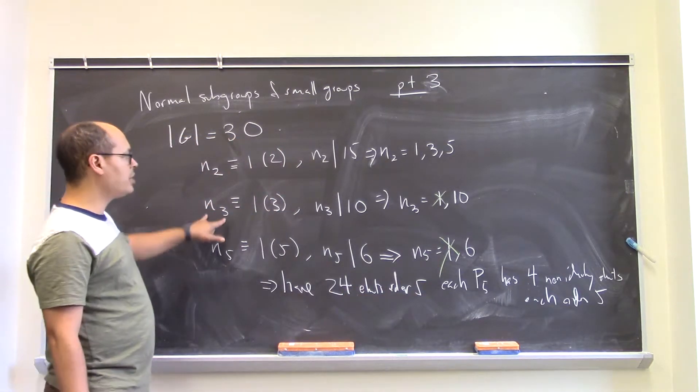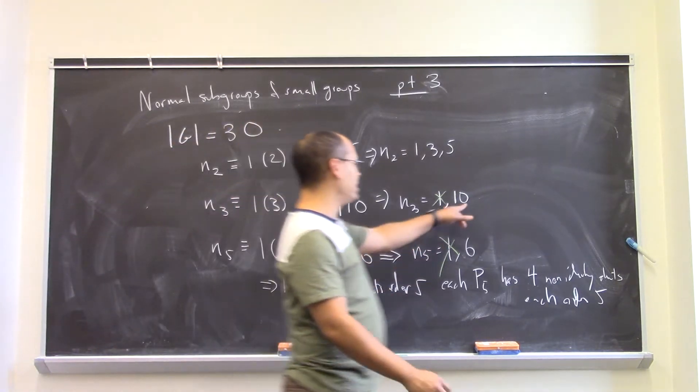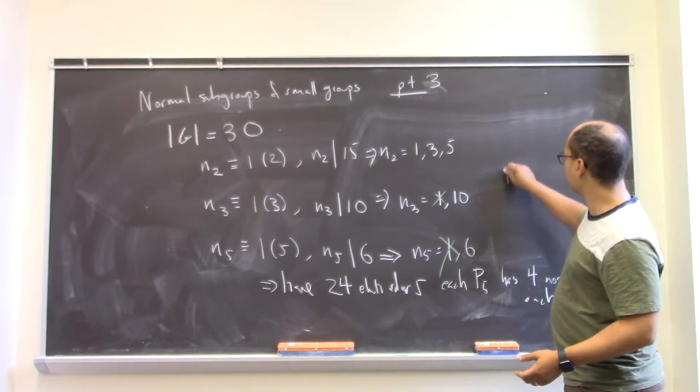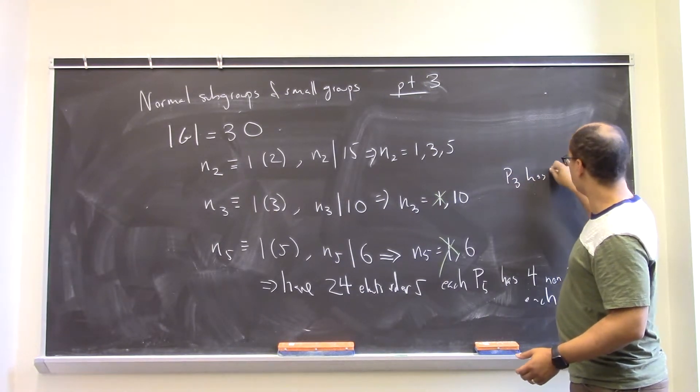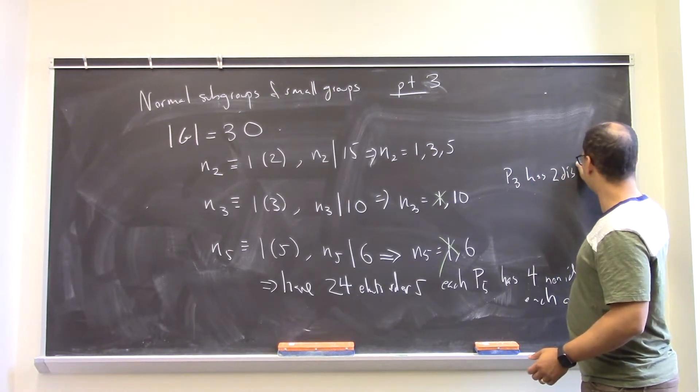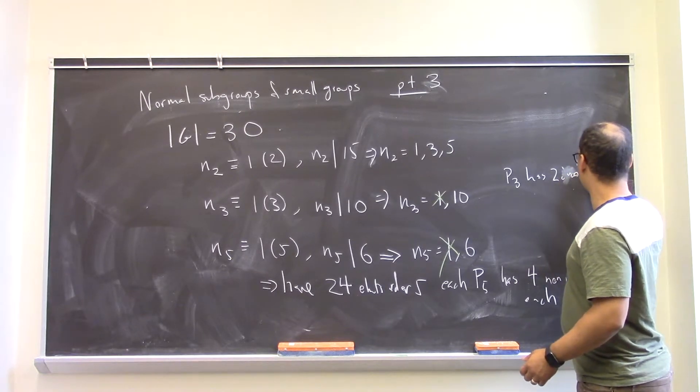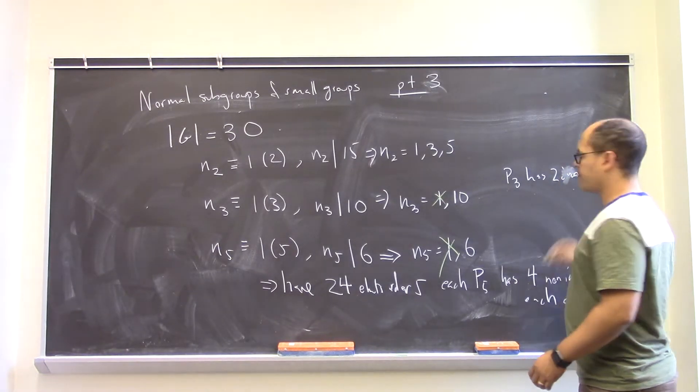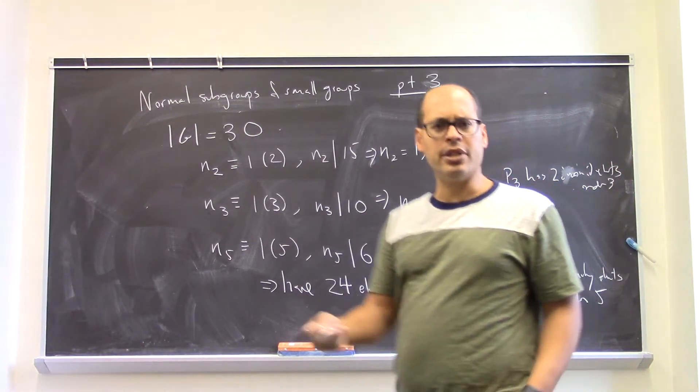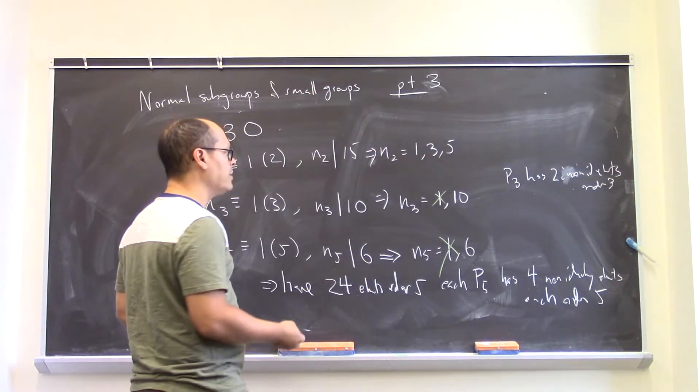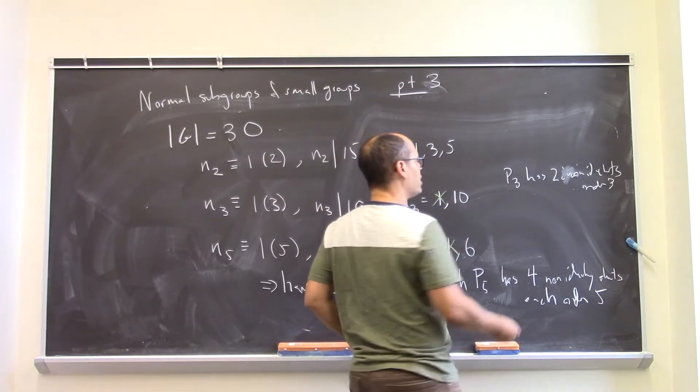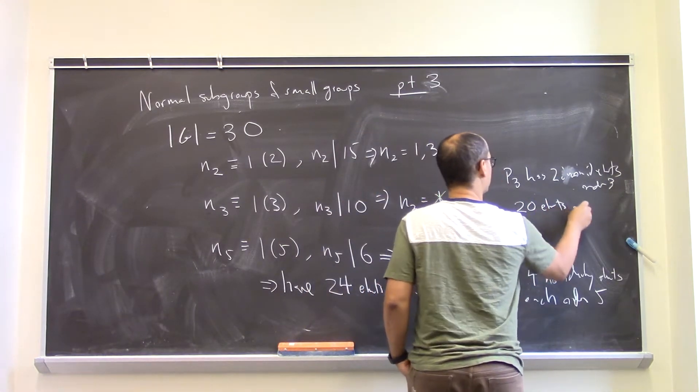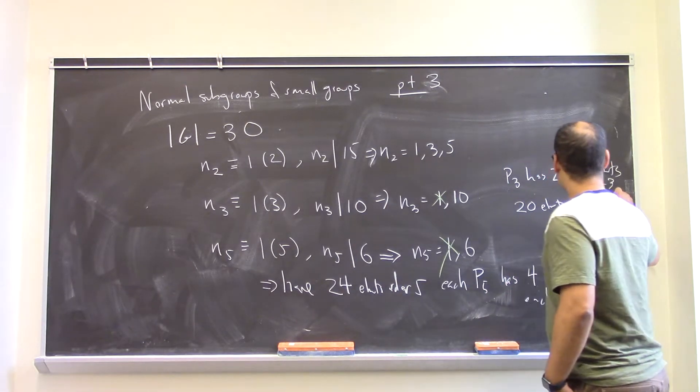On the other hand, for my 3-Sylow subgroups, of which there are 10 of these things, each of these 3-Sylow subgroups has 2 distinct non-identity elements of order 3. And again, they don't bump into each other except for the identity. So those 10 things would give me 20 elements of order 3.